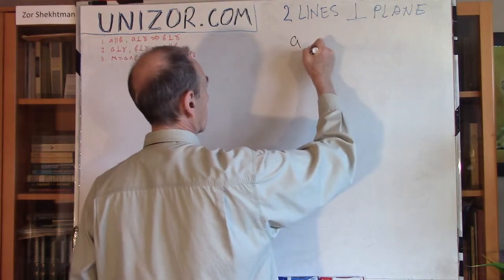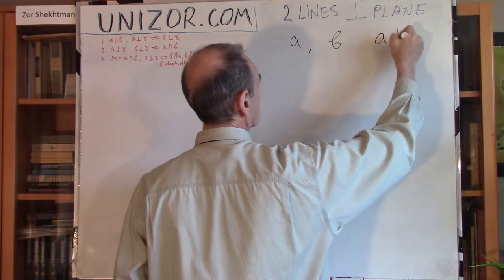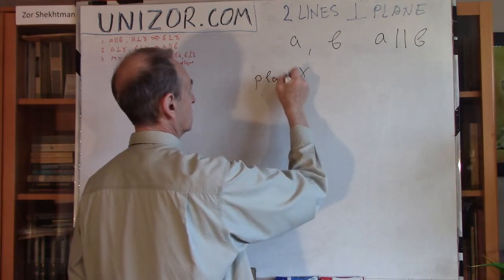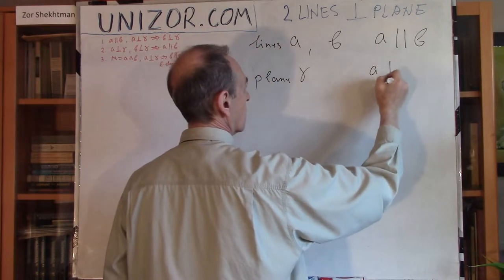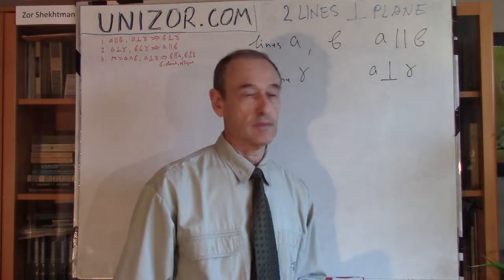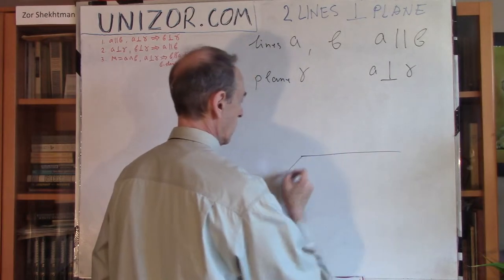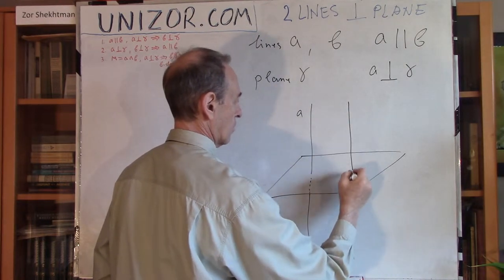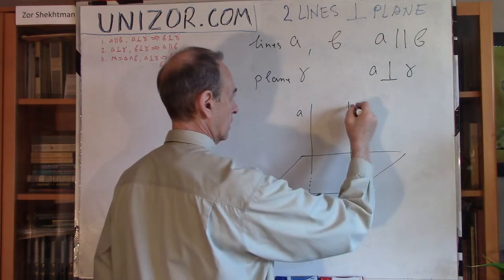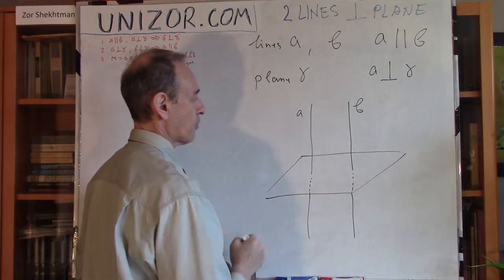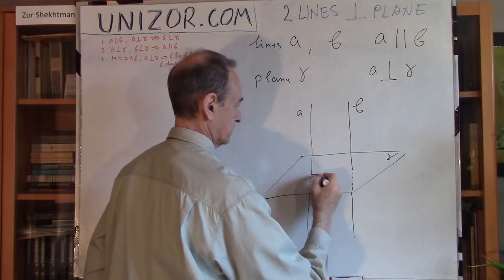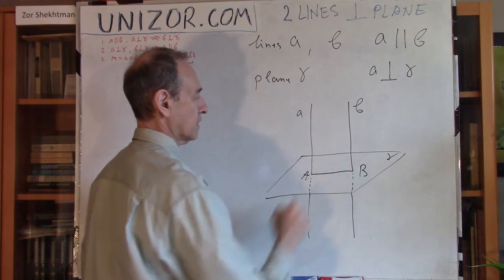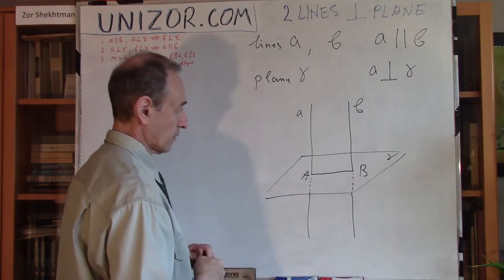If you have two lines A and B which are parallel to each other, and you have a plane — this is the plane and these are the lines — and you know that one of these lines is perpendicular to the plane. It's kind of obvious that the other line should also be perpendicular. So this is your A line, this is your B line, they are parallel to each other, and A is perpendicular to plane gamma.